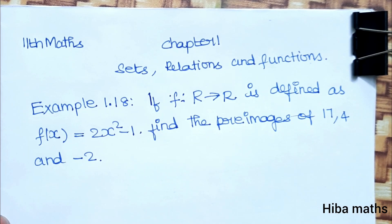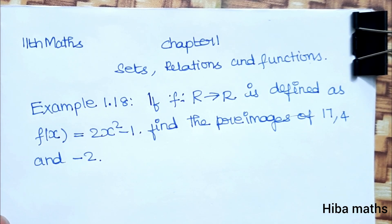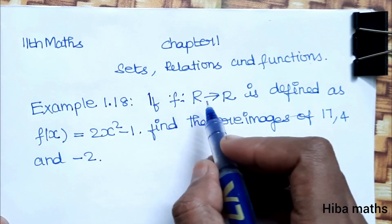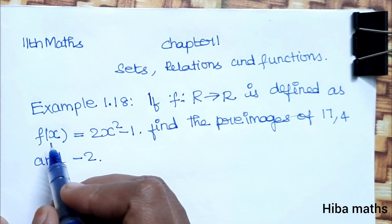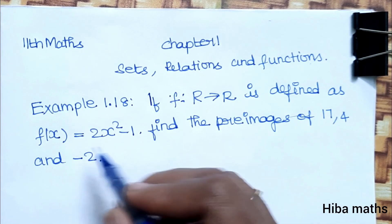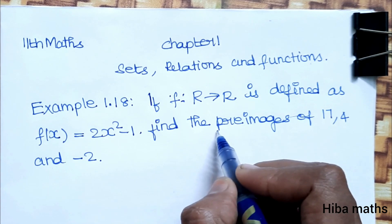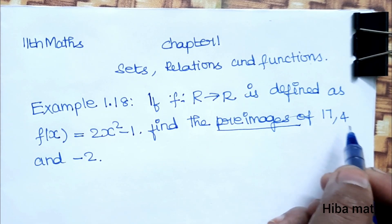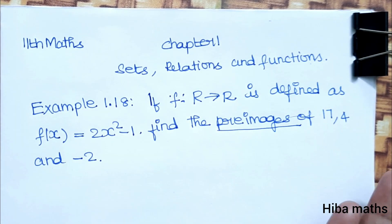Hello students, welcome to Hiba Maths 11 Standard Maths Chapter 1, Sets Relations and Functions Lesson. Example 1.18: If the function R to R is defined as f(x) equals 2x squared minus 1, find the preimages of 17, 4, and minus 2.